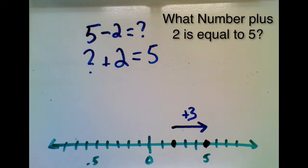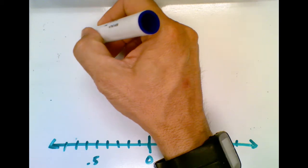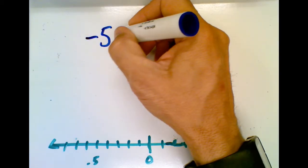And it turns out that this can be used for just about every integer subtraction problem. So let's try a different problem. Let's try something that might have a negative answer. So let's try what is negative 5 subtract 2.